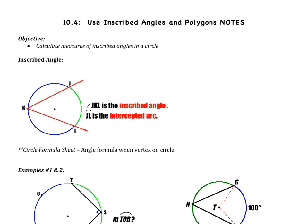Welcome to the fourth video of chapter 10, which is section 10.4. Use inscribed angles and polygons. There's only one objective for this video. We're going to calculate the measures of inscribed angles in a circle.